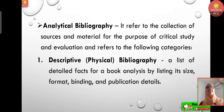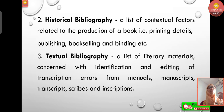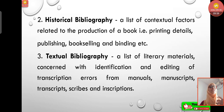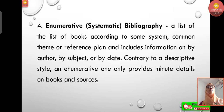International bibliography is a list of works, sources, publications, manuals, books, notes, articles, and websites collected from worldwide sources. Subject bibliography is a list of works related to a specific subject. Period bibliography is a list of works produced within a specific time range. Analytical bibliography refers to the collection of sources for critical study, and includes: descriptive or physical bibliography — listing size, format, binding, and publication details; historical bibliography — contextual factors like printing and binding; textual bibliography — concerned with identification and editing of transcription errors from manuscripts; and enumerative or systematic bibliography — a list of books by common theme, author, subject, or date.